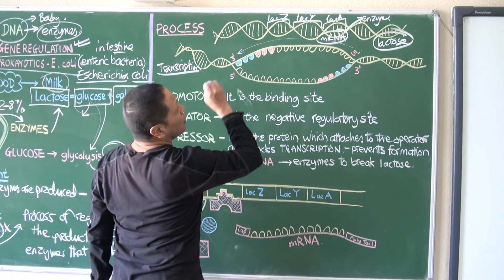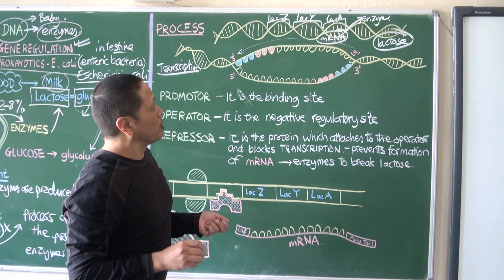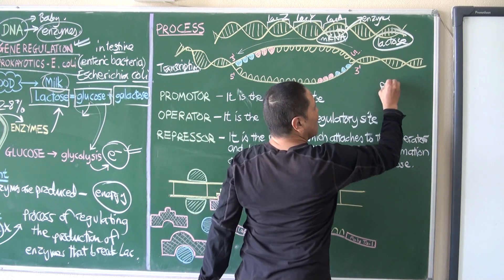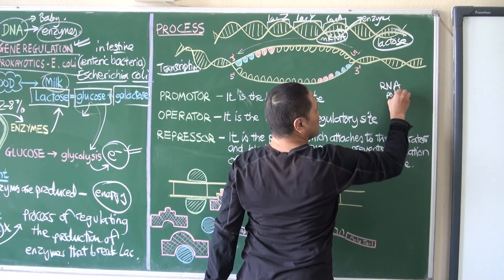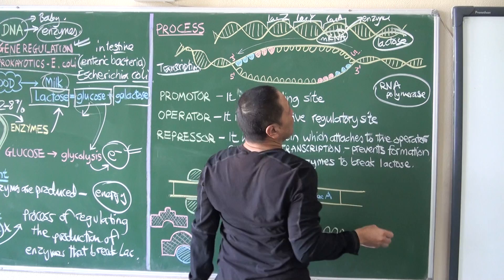So here, in order for the production of mRNA, we know that RNA polymerase is required. So this RNA polymerase is already here, let's say it's fixed on this.